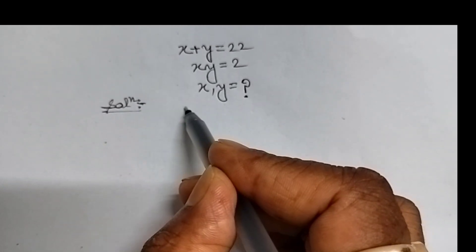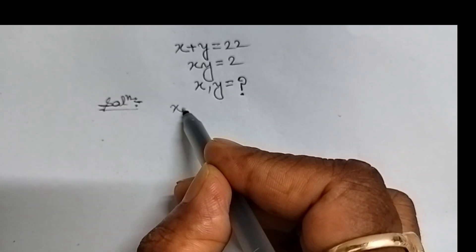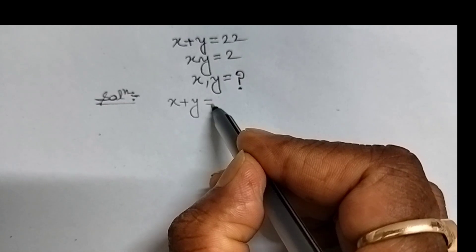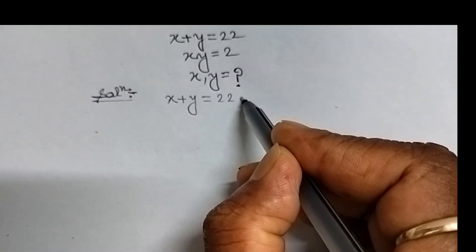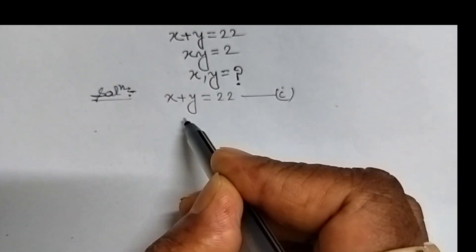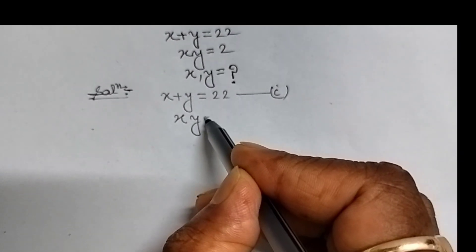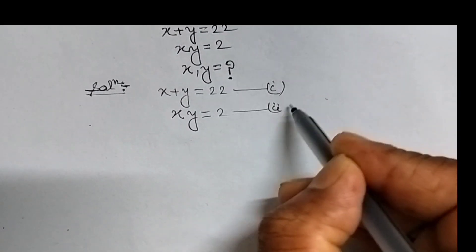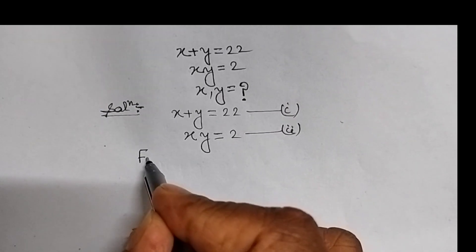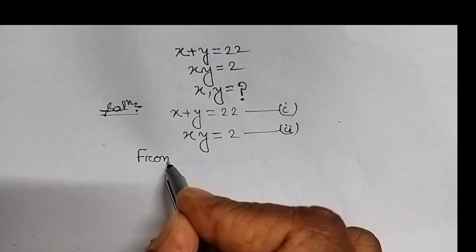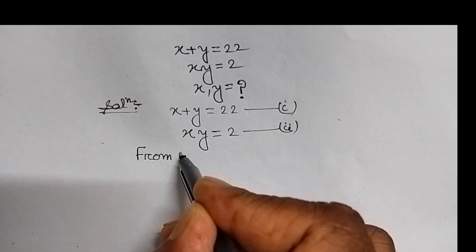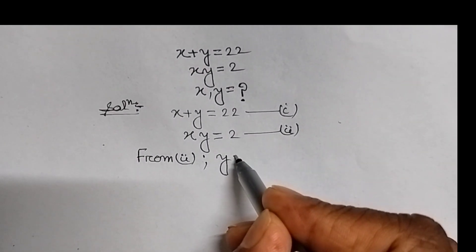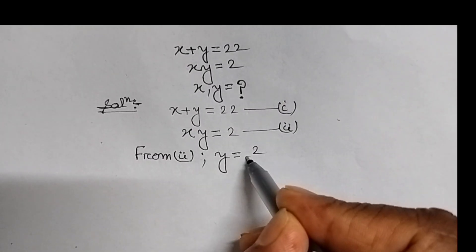First of all, we write the given equations: x plus y equal to 22 — this is equation number 1 — and x times y equal to 2 — this is equation number 2. Now, from equation 2, we get y equal to 2 upon x.